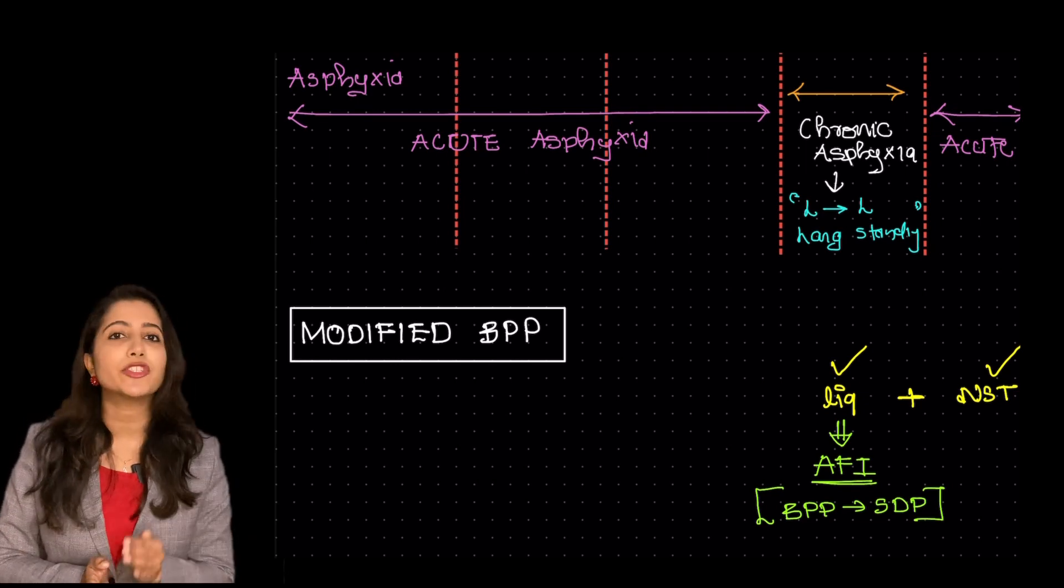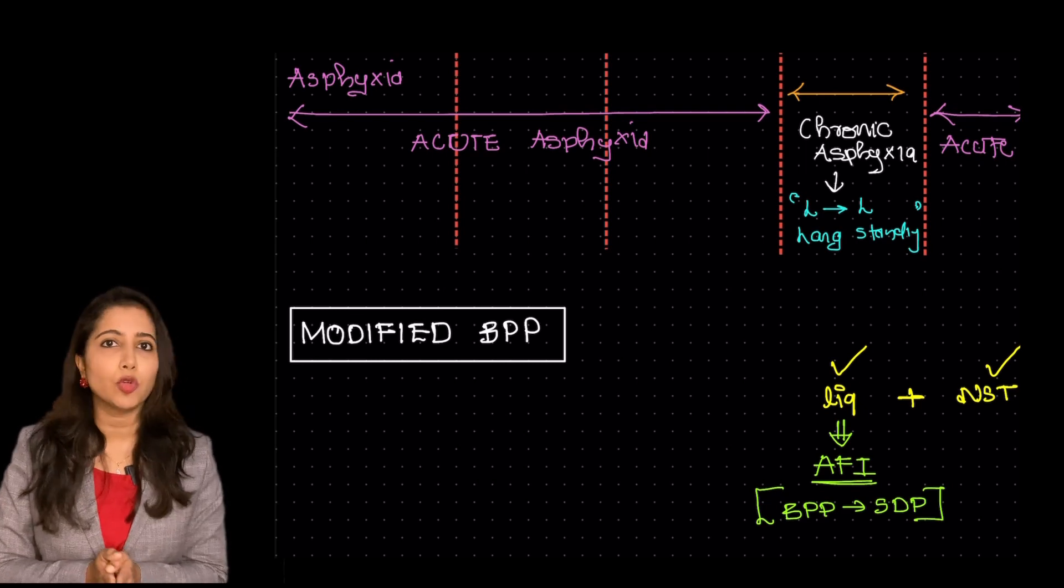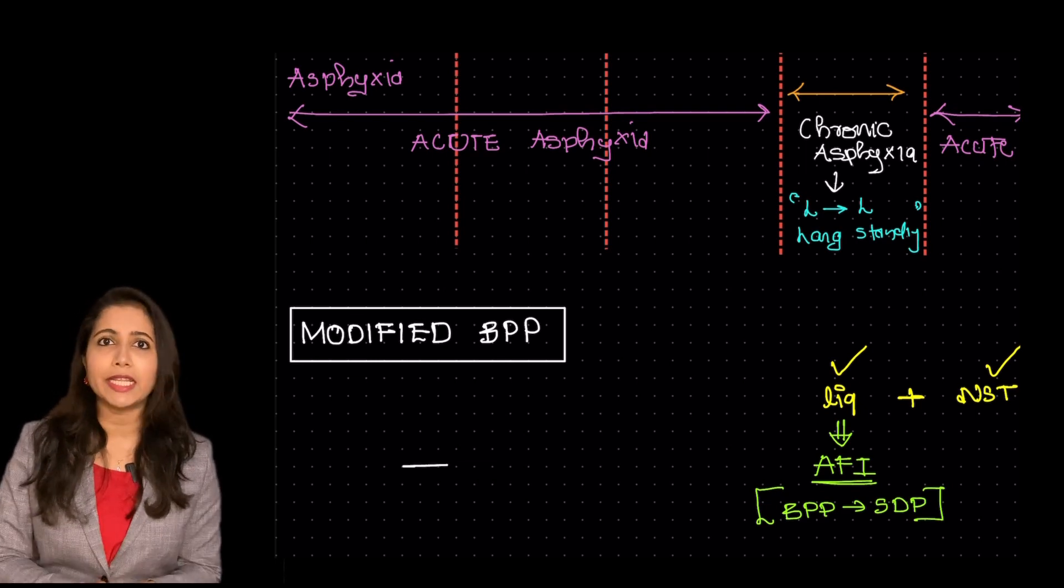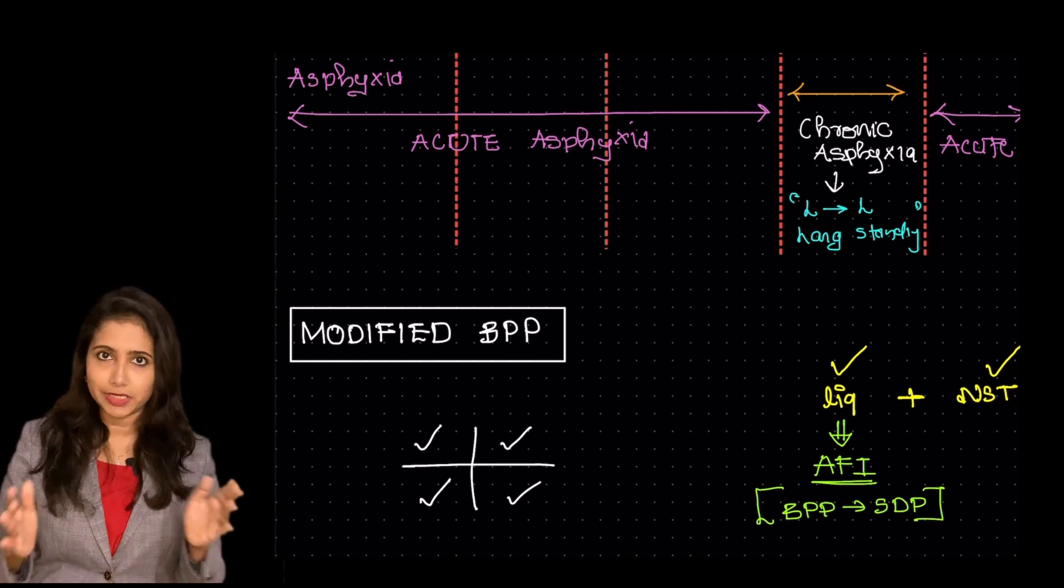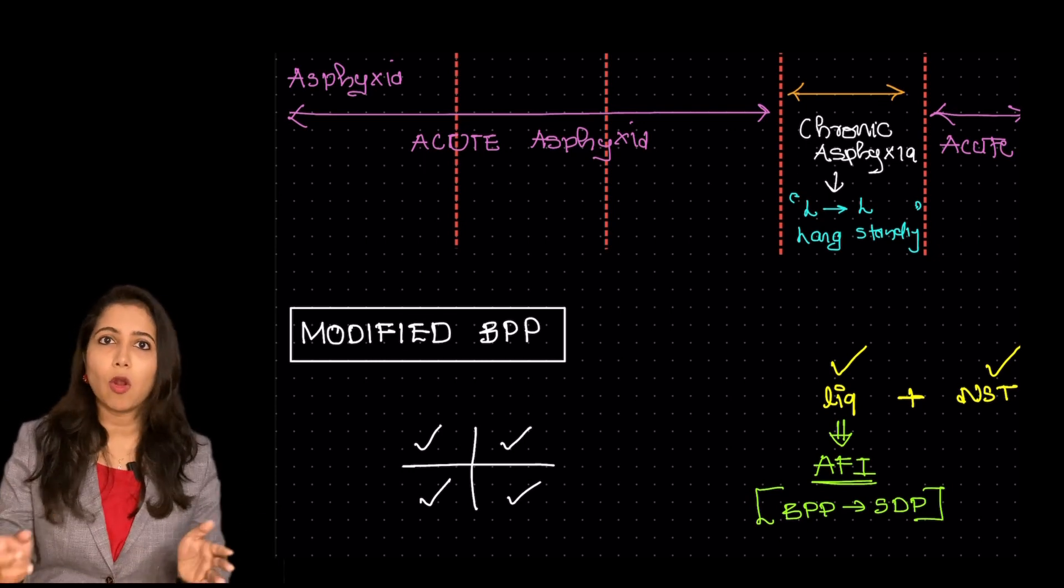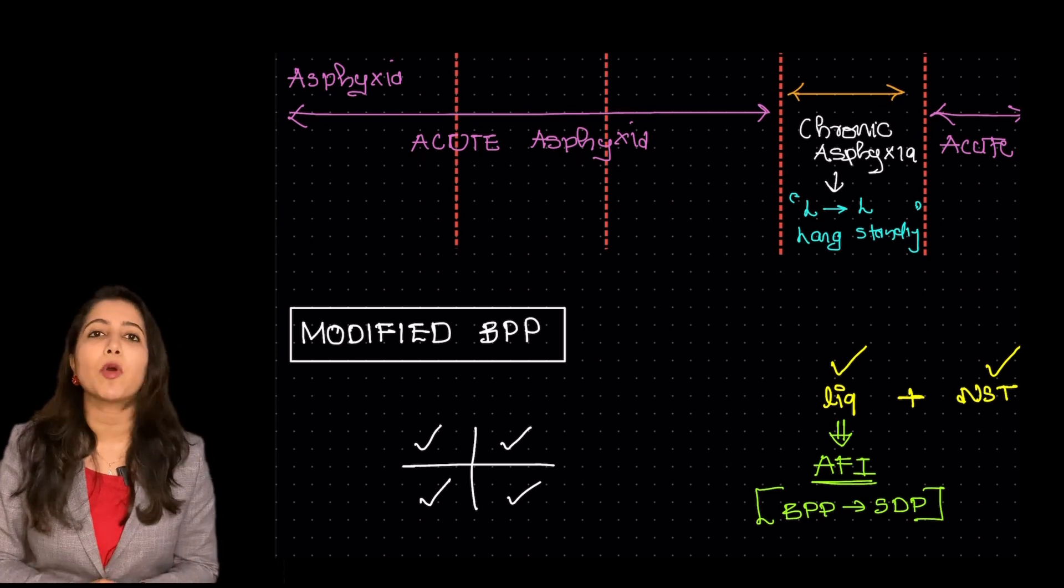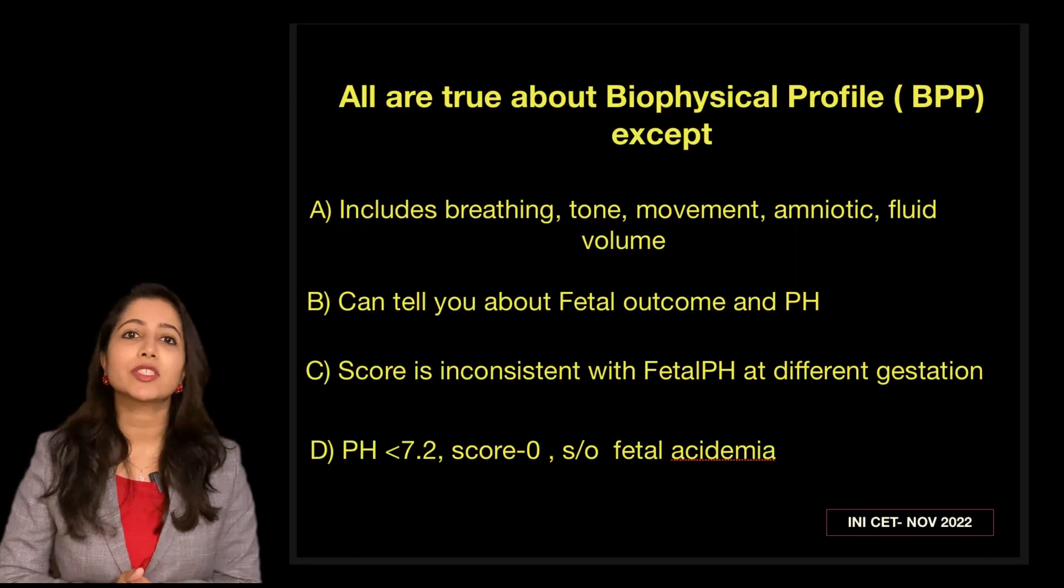So liquor is measured using amniotic fluid index. It is basically calculated by measuring all four pockets that is seen in the uterus. All four pockets are measured rather than the single deepest pocket.